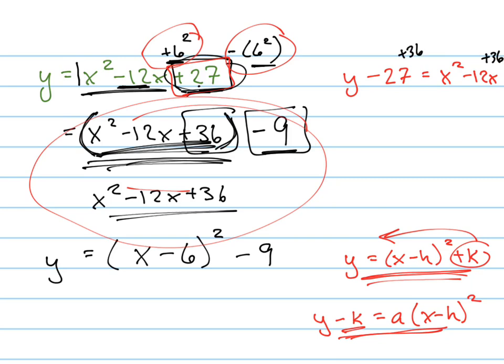Now, instead of adding and subtracting 36, I'm going to add 36 to the right side and add 36 to the left side. Let's try one. What is 36? Half of negative 12 squared. Half of it squared. When I do that, I get y plus 9.